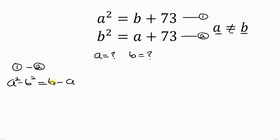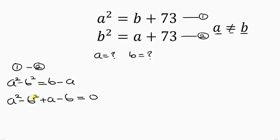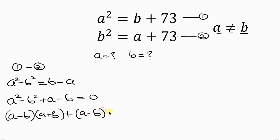Now we're going to move what we have on the right-hand side to the left-hand side. So on the left we have a squared minus b squared. When we move negative a to the left it becomes plus a; when we move b to the left it becomes minus b, equal to 0. This is an expression in the form of difference of two squares, which can be written as (a minus b) times (a plus b), plus (a minus b), equal to 0.